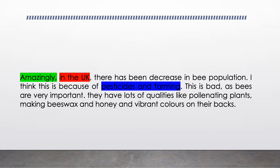In red we actually have a bit of parenthesis, so that's good. And blue is pesticides and farming — that's our subject knowledge that we are getting in there. However, a newspaper report shouldn't be written in the first person. Here it says 'I think this is because of' — that's first person, so it needs to be written in the third person. I can also see that we haven't used a capital letter at the start of one of the sentences: 'They have lots of qualities like pollinating plants.' And in that sentence we list qualities, which is good. However, I don't think that a quality of having vibrant colours on their backs is much use when we're linking it back to our heading, our title and subheading.